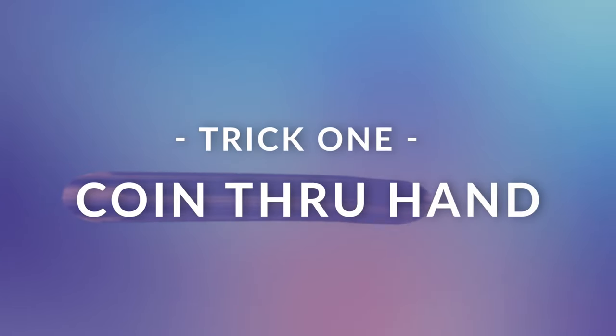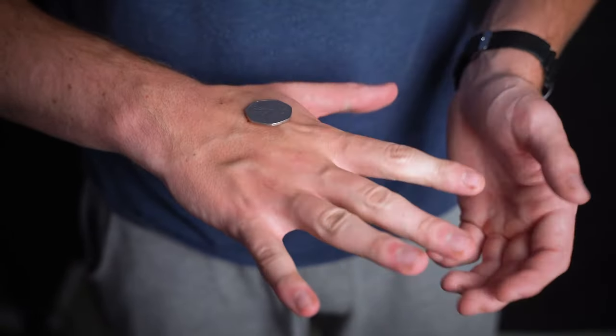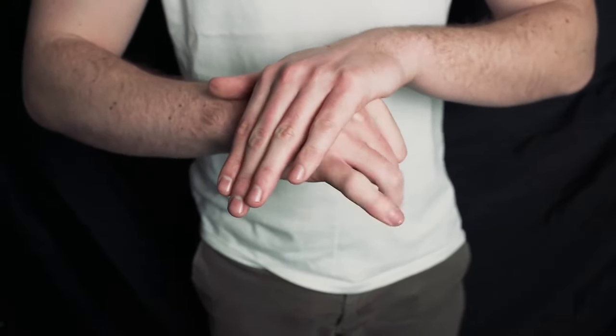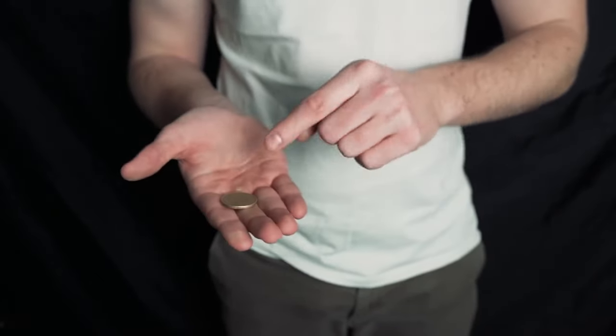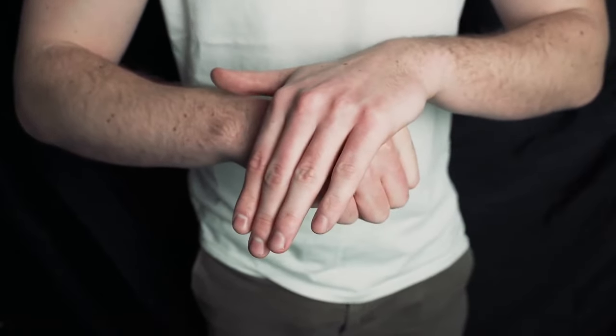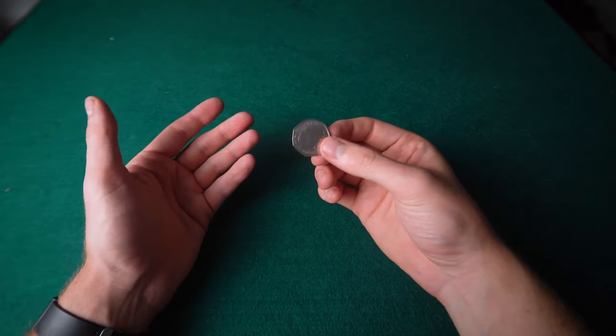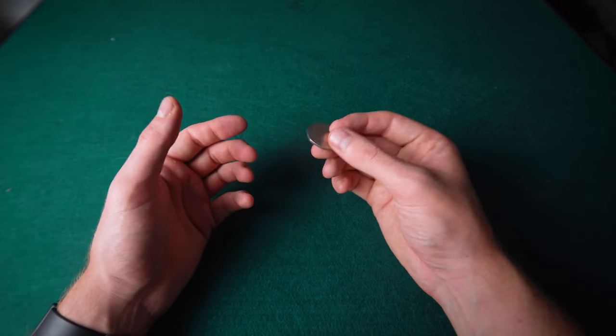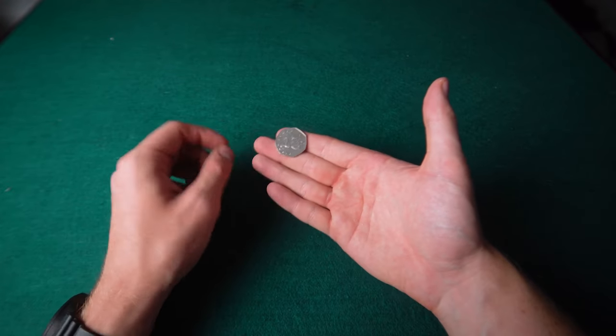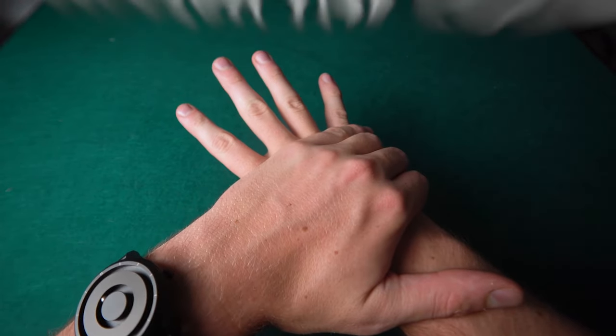So this first trick is called coin through hand and it's a really fun bar bet that I do all the time. It takes a couple of minutes to learn. The magician has a coin, puts it into his right hand and rubs his fist and the coin jumps onto the back of his hand. Let me show you that again. He puts the coin in his right hand, rubs it and the coin impossibly jumps. The coin jump is a fun move that I like just doing casually if you're at a bar or that sort of social environment and it's just a fun bar bet you can basically do wherever you are.